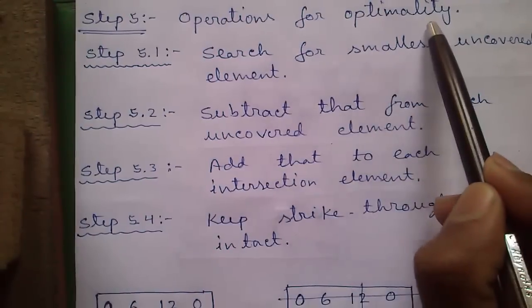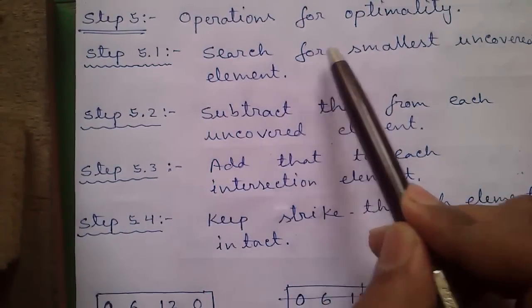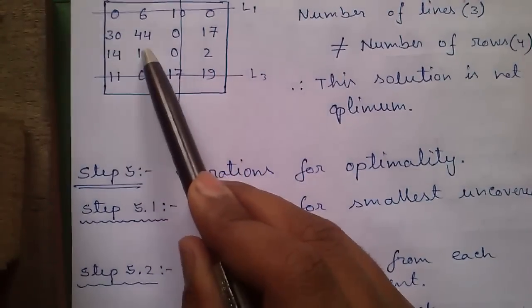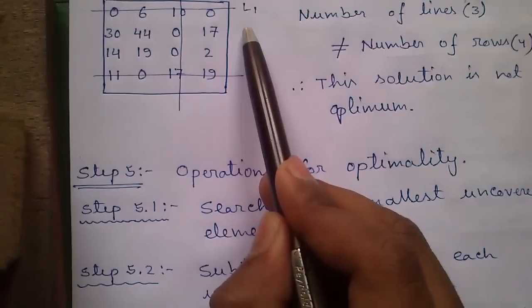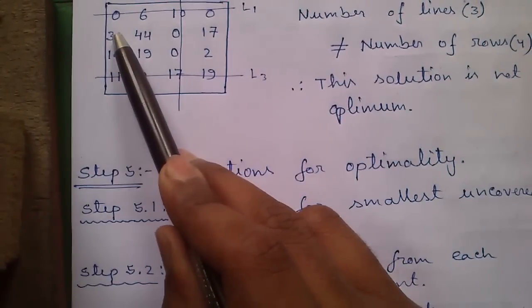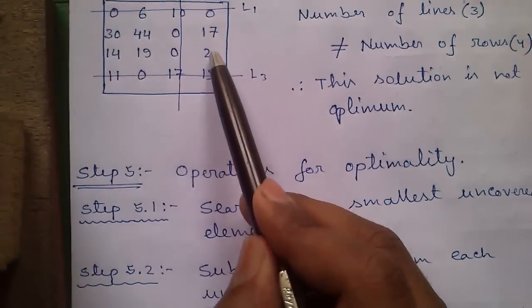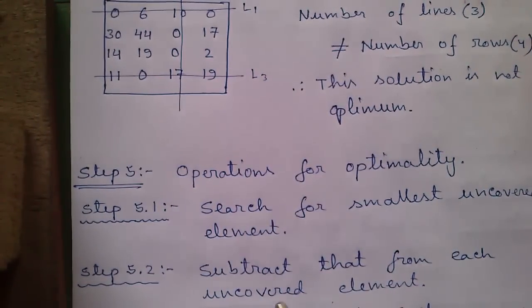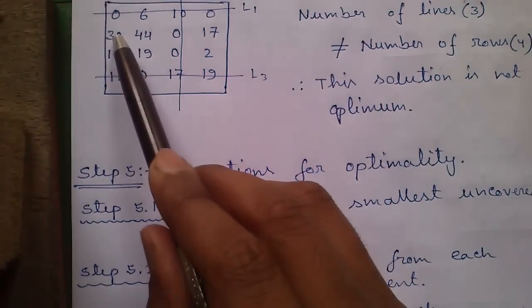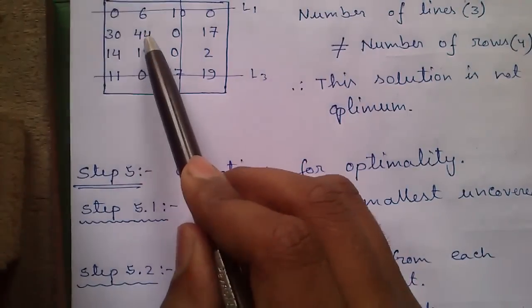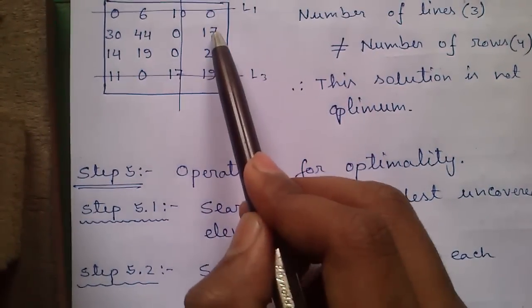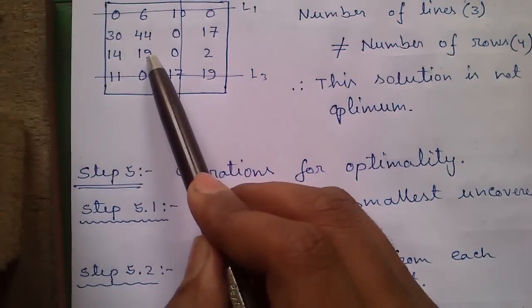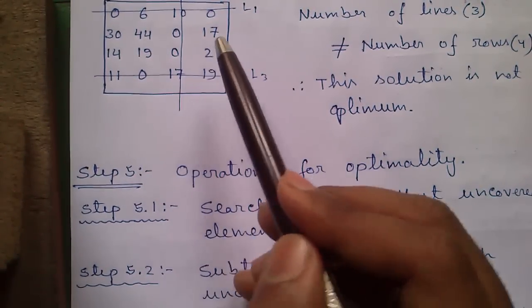Step 5: Operations for optimality. Step 5.1, search for the smallest uncovered element. These are uncovered elements, meaning no line has gone through them. Among the uncovered elements the smallest number is 2. Step 5.2, subtract that from each of the uncovered elements. So 30 minus 2 equals 28, 44 minus 2 equals 42, and so on.